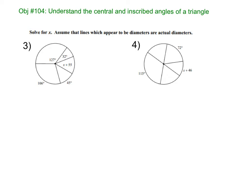So I'm going to fill in what I know. I know this is 127. This is 32. This is X plus 55. So notice, unlike the last two, we don't have a diameter. But I know the entire circle altogether is going to be 360. So I'm going to add all that up.